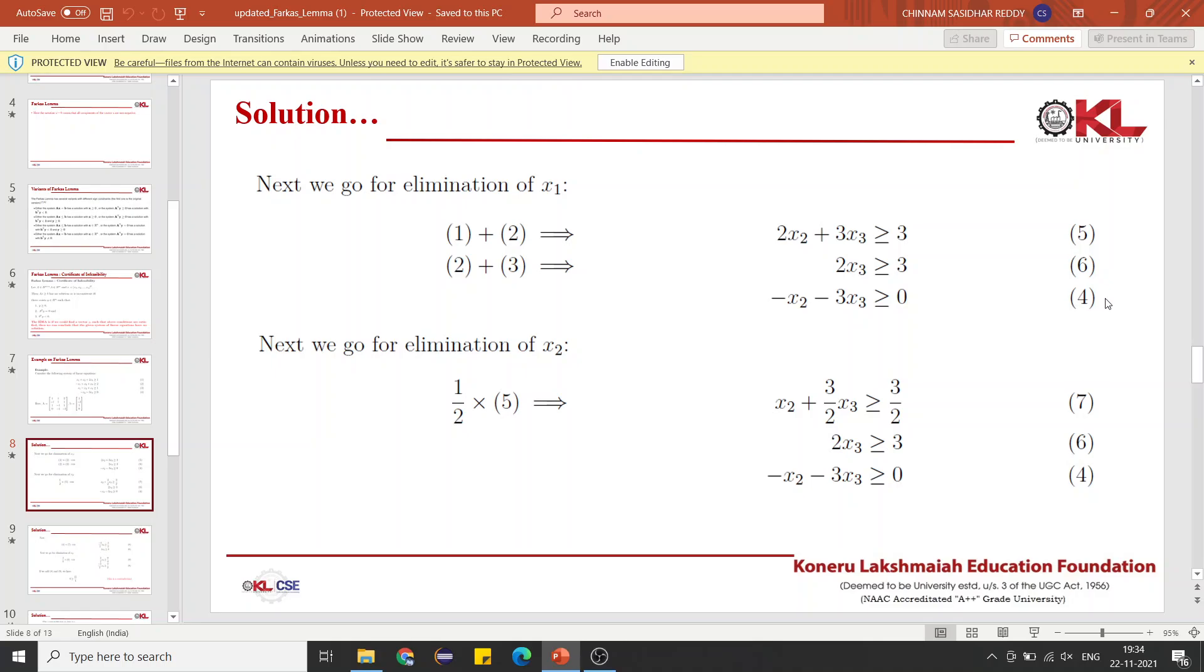Now, we have variables x2 and x3. The next thing we will do is eliminate x2. We need to multiply equation 5 with 1/2 and add that to equation 4. That will eliminate our x2.